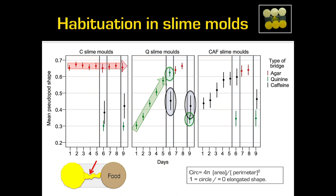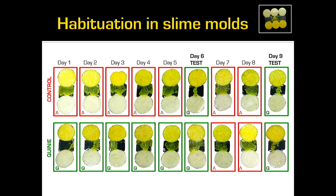We got exactly the same results with caffeine — habituation, specificity (reacting to quinine), and recovery. In pictures: control slime molds spread widely on the bridge; quinine-treated ones make very tiny pseudopods; after a resting period with agar, they spread again and heal. The quinine group avoids strongly on day one, but pseudopods grow progressively, showing full habituation on day six and recovery on day nine.